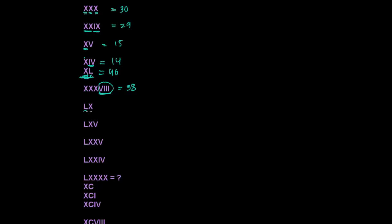Here L and in the right side I'm adding, so 50 plus 10 is 60. Again 50 and 15: 50 plus 10 is 60 and then plus 5 is 65. And here 50, 60, 70, and then 5 is 75. Now here 50, 60, 70 and the sequence is breaking — we were expecting another X but it breaks — so take IV together: IV is 4, so 70 plus 4 is 74.